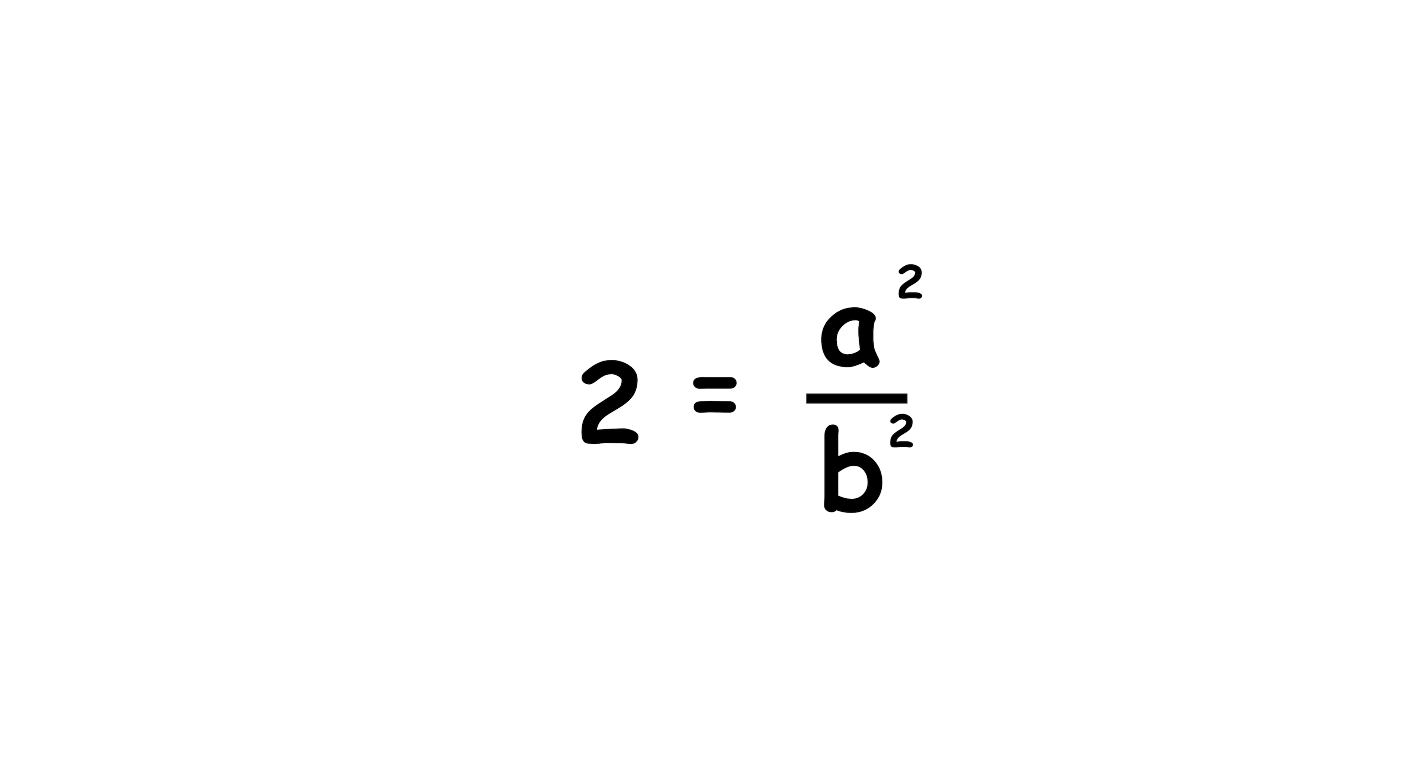Now, let's multiply both sides of this equality by b squared. We find 2b squared equals a squared, which we'll rewrite as a squared equals 2b squared. b is a whole number, so its square must also be a whole number. 2 times a whole number is always even, meaning a squared must be even.